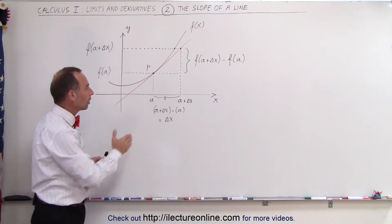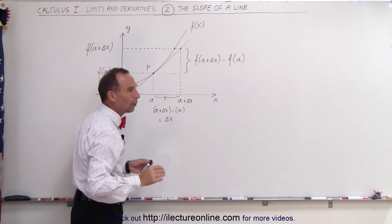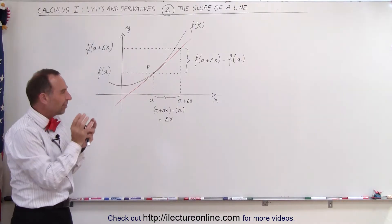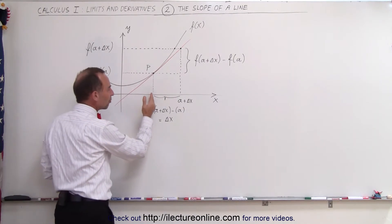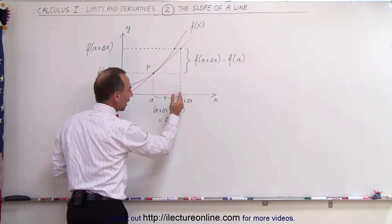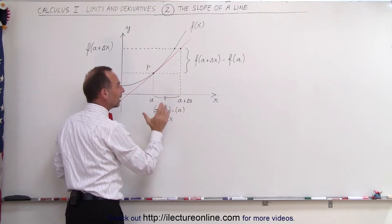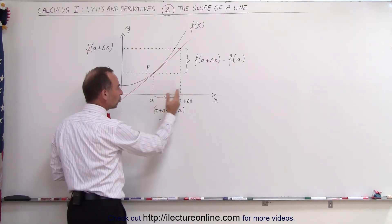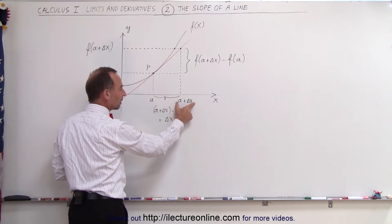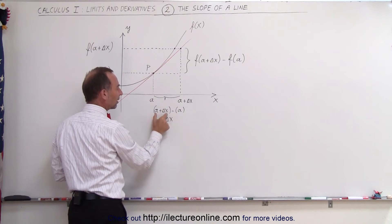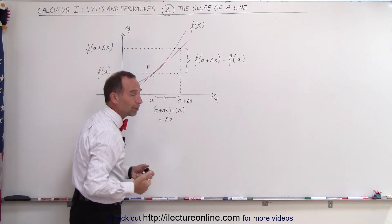Let's pick another point a little bit further to the right — some delta x to the right. In terms of distance, delta x is usually considered to be a very small distance. So if we move a very small distance to the right, then this point right here is x equals A plus delta x, such that the distance between those two points is equal to A plus delta x minus A. The distance between these two is simply delta x.